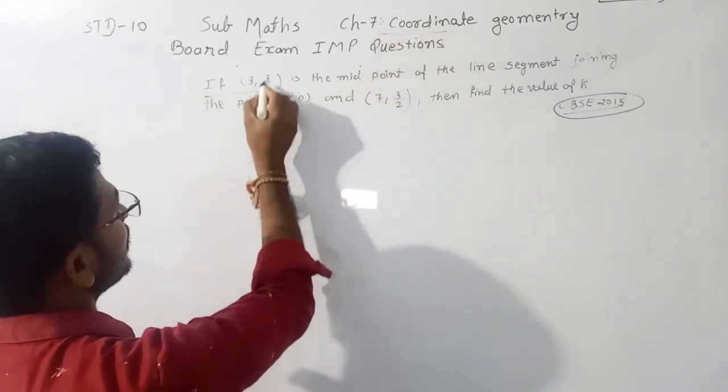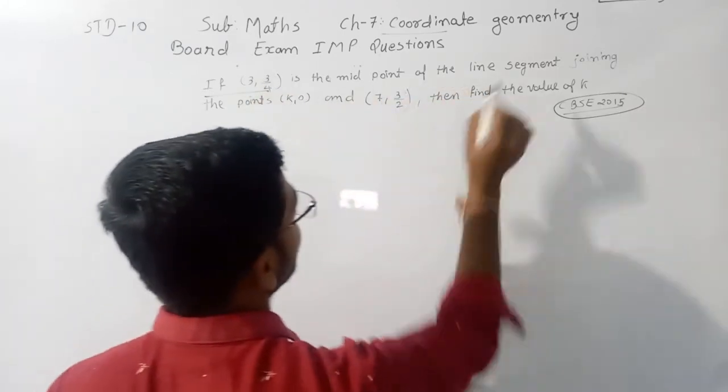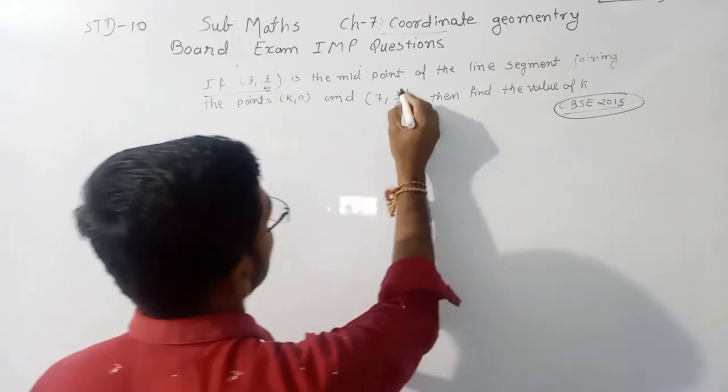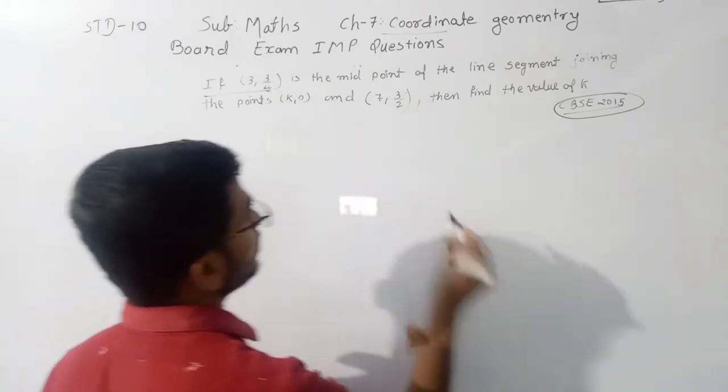If (3, 3/4) is the midpoint of the line segment joining the point (K,0) and (7, 3/2), then find the value of K.